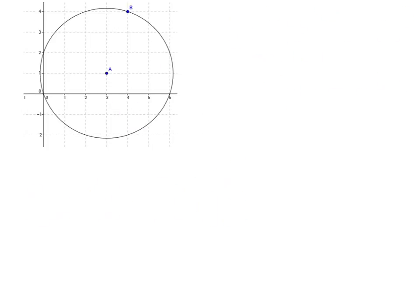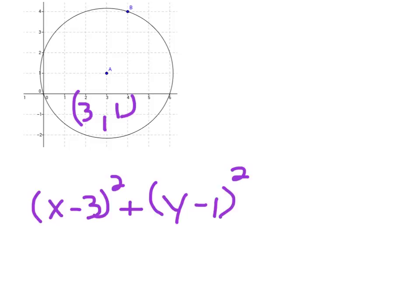All right, here we go with another one. Again, our center is at (3, 1). So our equation is (x minus 3) quantity squared plus (y minus 1) quantity squared, and we need to find r squared.